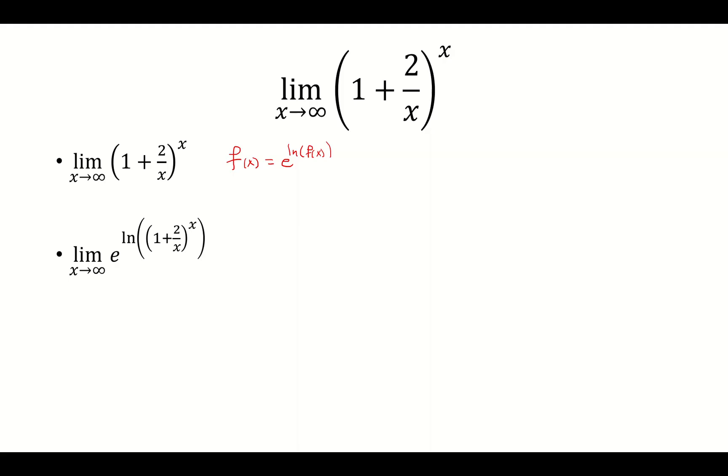Okay, and then now the log property says bring the exponent out in front of the natural log. So we have e raised to the x times natural log of 1 plus 2 over x.